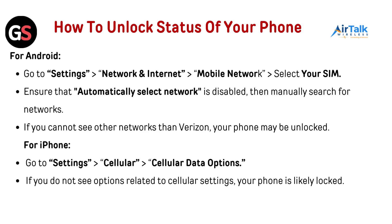For iPhone, go to Settings, then Cellular, then Cellular Data Options. If you do not see options related to cellular settings, your phone is likely locked.